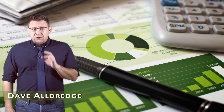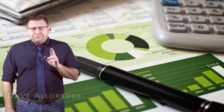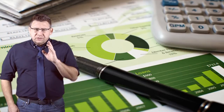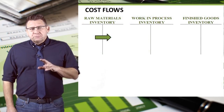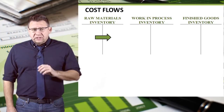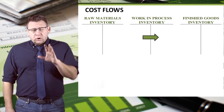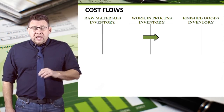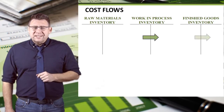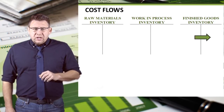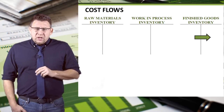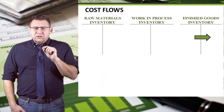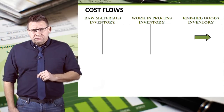One important thing we need to understand in determining product costs is the flow of costs through the manufacturing process. The cost flows move from the raw materials account to the work in process account and finally to the finished goods inventory account. That might seem like abstract accounting, but you might find it easier to picture the physical flow of costs.